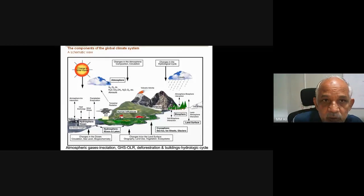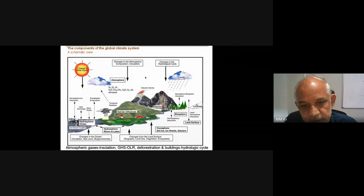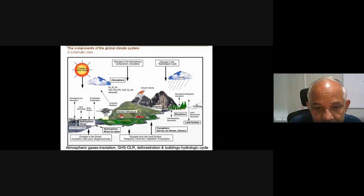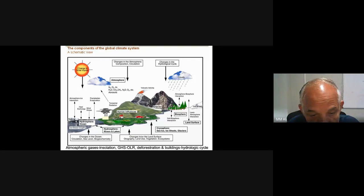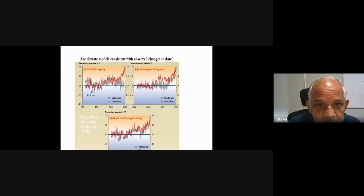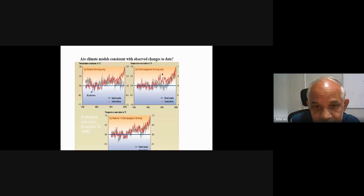These are the various components of the global climate system. The hydrological cycle involves water coming from the atmosphere to Earth's surface, then runoff, then evapotranspiration — completing a circle. Various components include atmosphere, precipitation, evapotranspiration, atmospheric-ice interaction, and terrestrial radiation. Human influences — like cutting trees, constructing buildings and ports — affect albedo and are part of the global climate system.